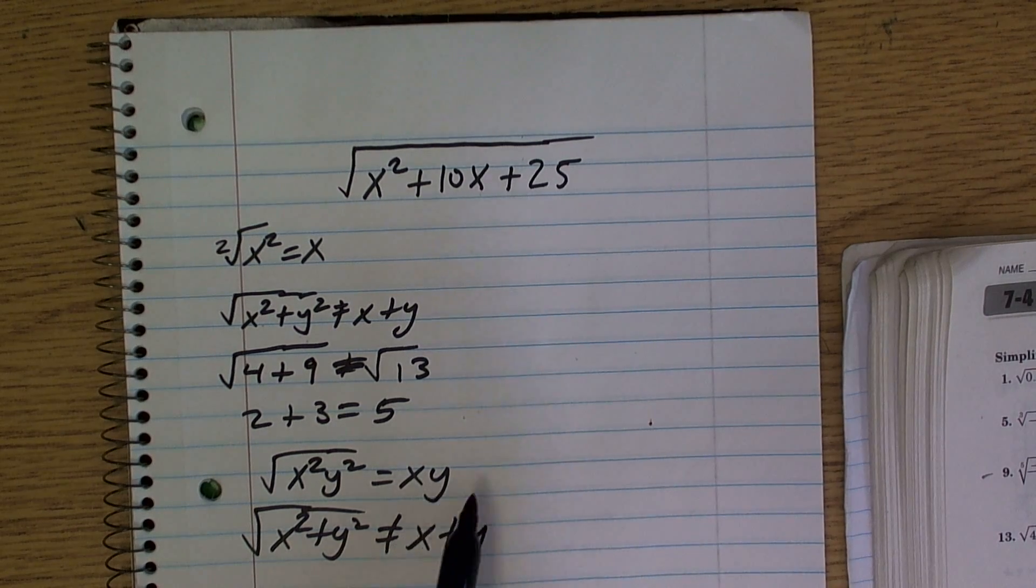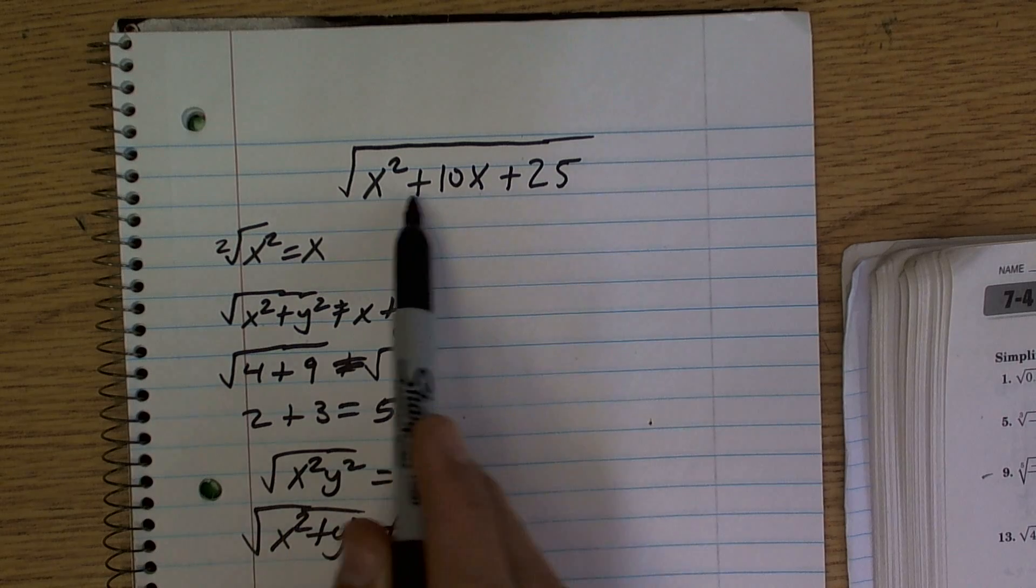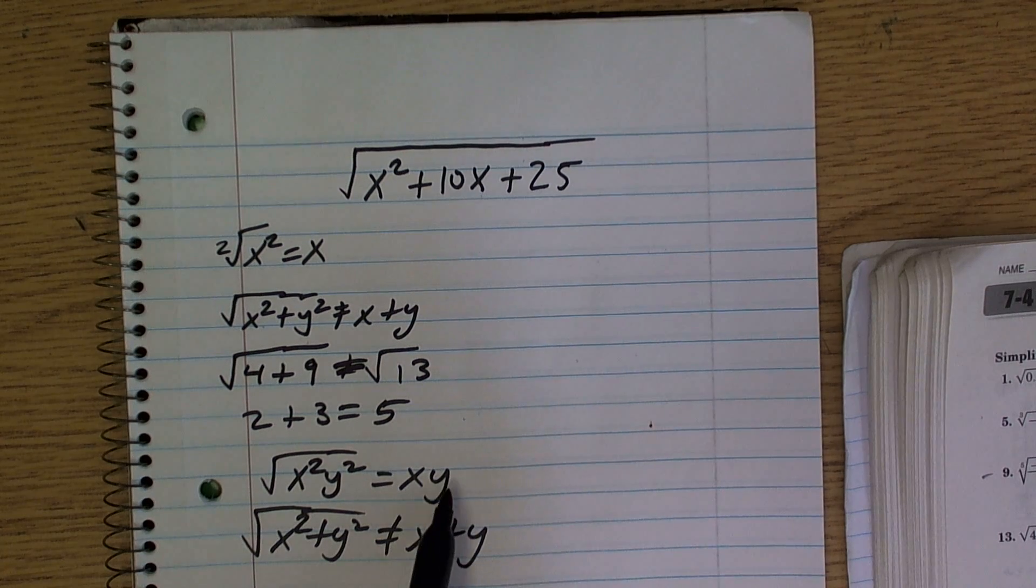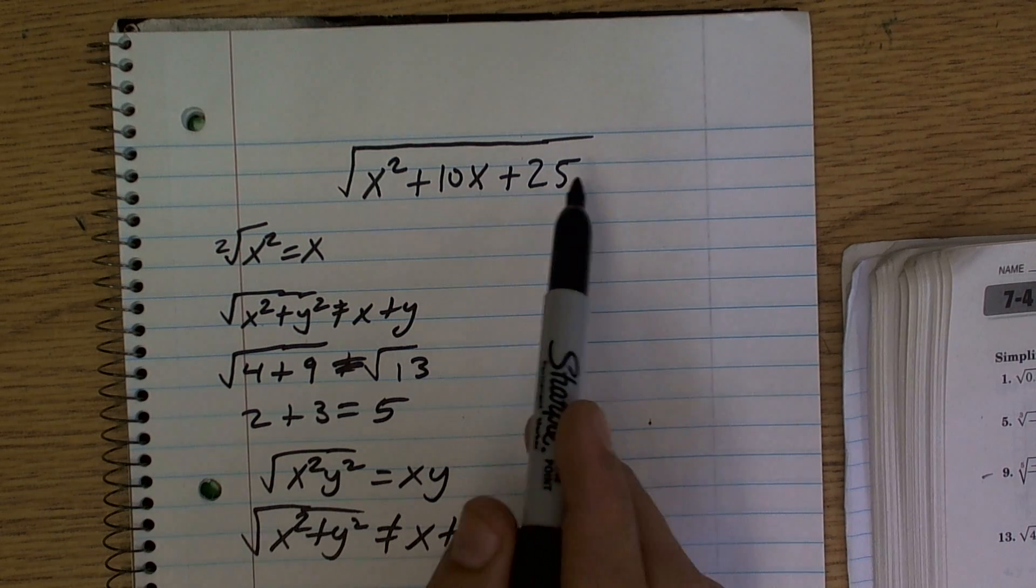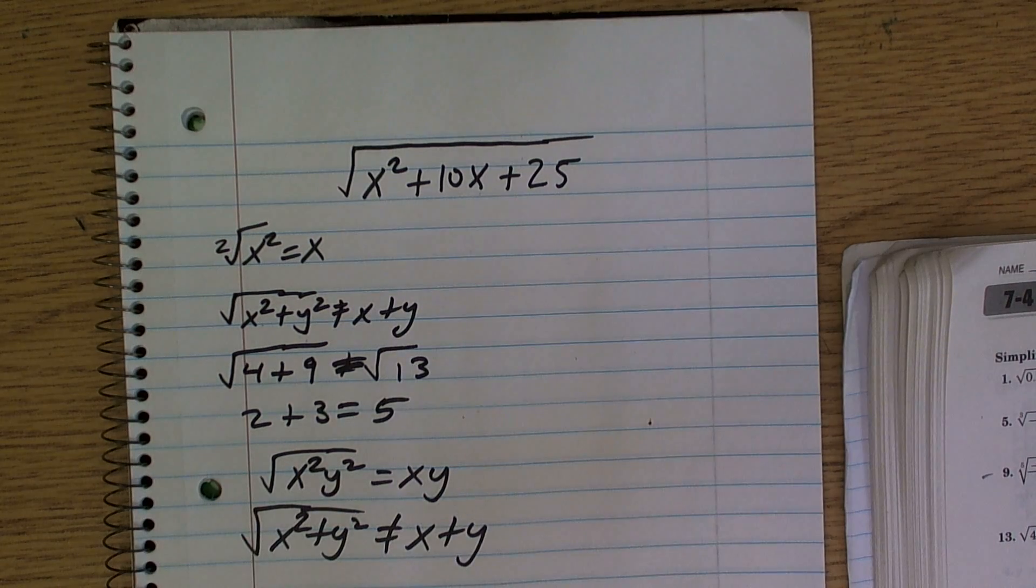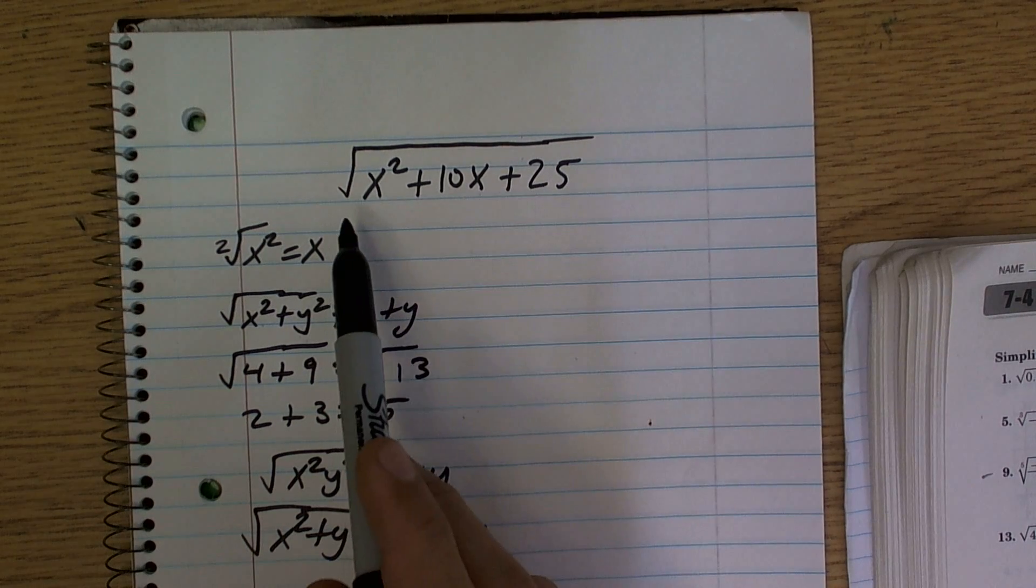So what we need to do is look at: can I write all of this whole term as a square term, or can I write it as a multiplication? I can't take the square root of each one of these three terms. So what I'm going to have to do is, how can I maybe rewrite this?